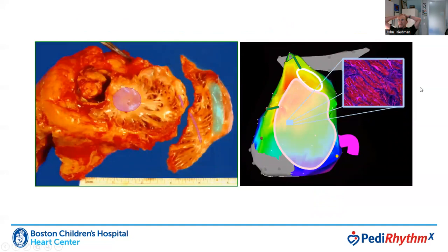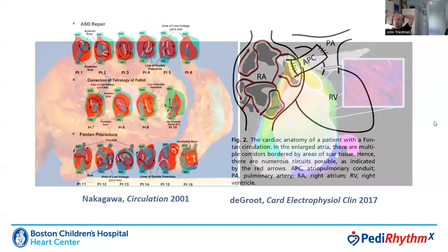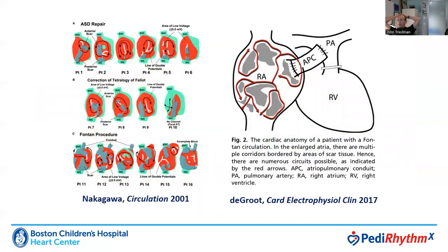We understand the substrate in Fontans of the atrial myocardium to be exceptionally diseased. On the left, we have an old picture showing types of macroscopic obstacles that might be seen in the endocardium of an explanted right atrium, including an atrial septal defect patch, an atriotomy with sutures embedded in it, and the crista terminalis. We also know from histologic studies that the atrium is thickened and fibrotic, and these areas of fibrosis — both macroscopic and histological — on these diseased right atriums can serve as the basis for incisional or scar-based reentrant tachycardias.